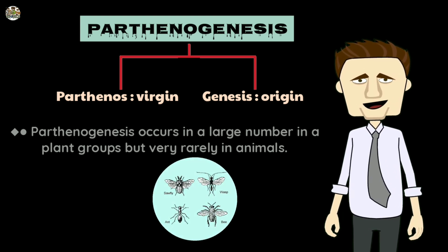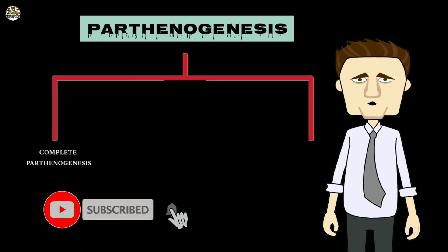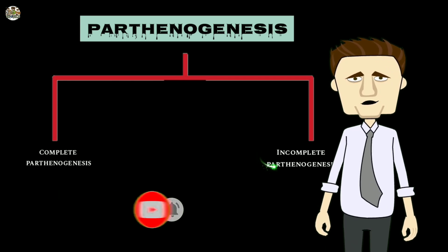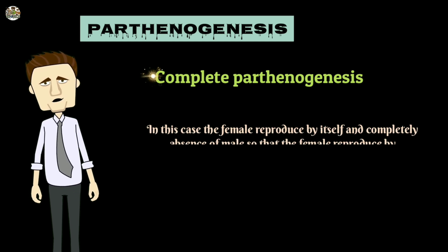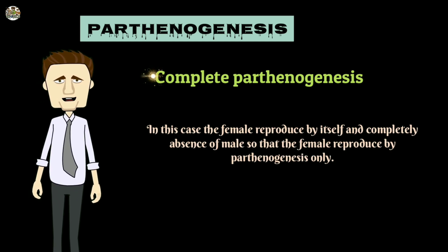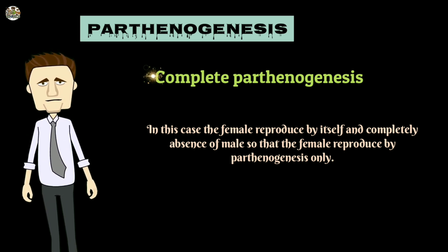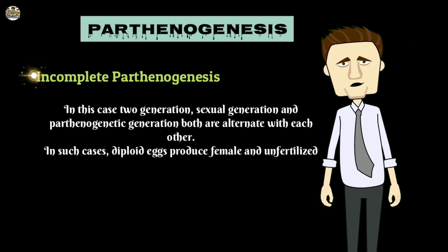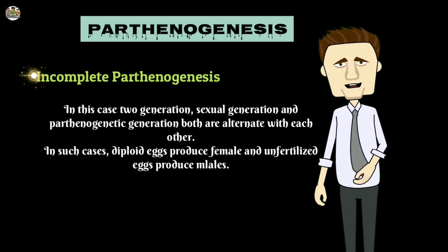There are two types of parthenogenesis: complete parthenogenesis and incomplete parthenogenesis. In complete parthenogenesis, the female reproduces by itself with a complete absence of males, so the female reproduces by parthenogenesis only. In incomplete parthenogenesis, two generations — the sexual generation and the parthenogenetic generation — alternate with each other.